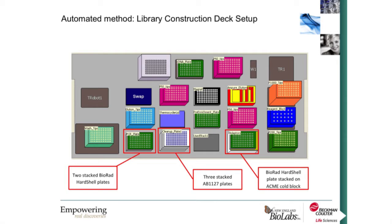The library construction method takes advantage of the same deck setup: 96-channel wash station, orbital shaker, and static Peltier. For on-deck cycling, we have the T-Robot and a variety of stacked plates. If you choose to keep the adapter plate on-deck without the adapter pause option, the deck is populated with an ACME cold block for keeping the adapter cool. If you choose to do the adapter pause, it simply puts the adapter plate in place without the ACME block.